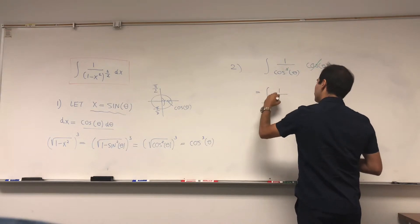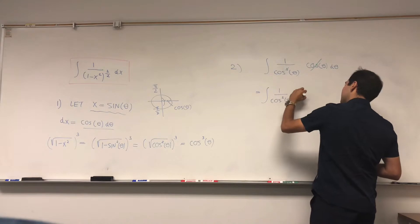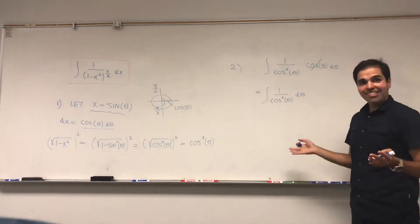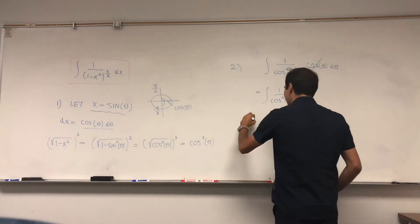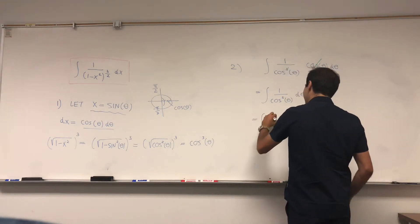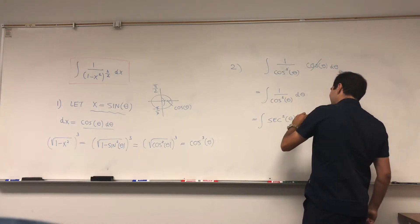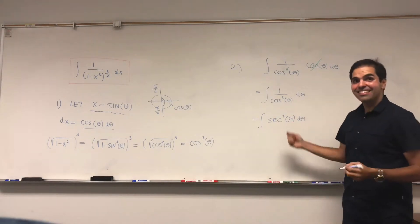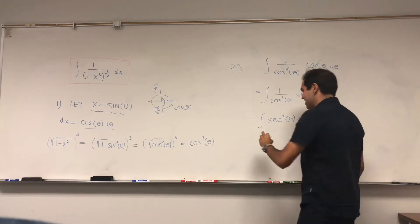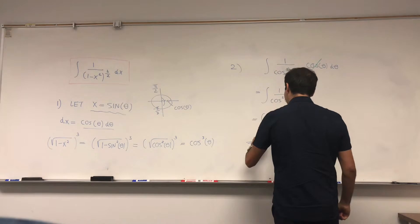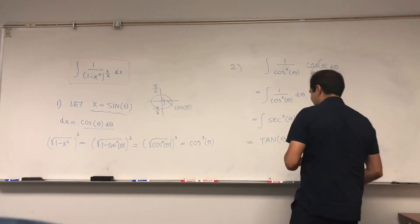Another name for 1 over cosine is secant, so this just becomes the integral of secant squared d theta. How nice! We know what an antiderivative of secant squared is—it's just tangent. So the answer is tangent of theta plus a constant.